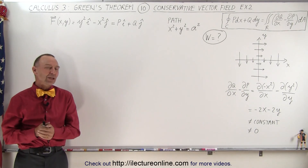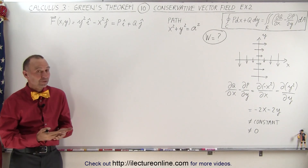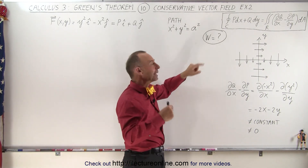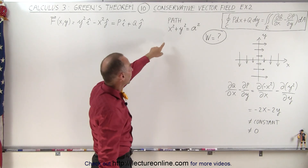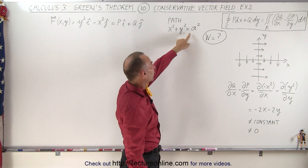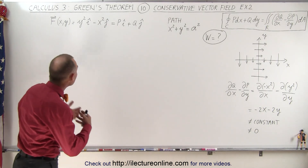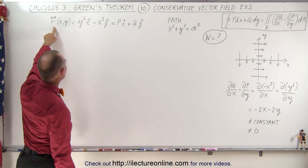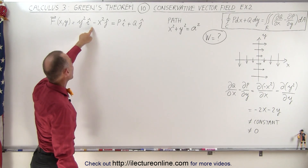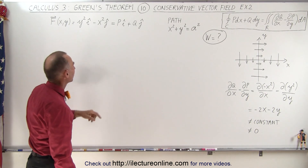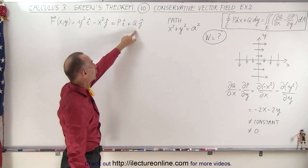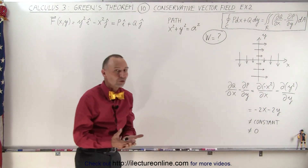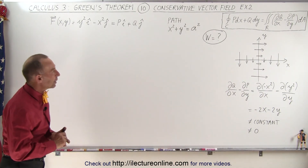Welcome to our lecture. Let's take a look at another example of dealing with a conservative vector field and trying to find the work done by integrating along a line integral along the path x² + y² = a². The vector field is defined as y² in the i-direction minus x² in the j-direction. The general form will be P in the i-direction plus Q in the j-direction, which will represent the left portion of the integral of Green's theorem.